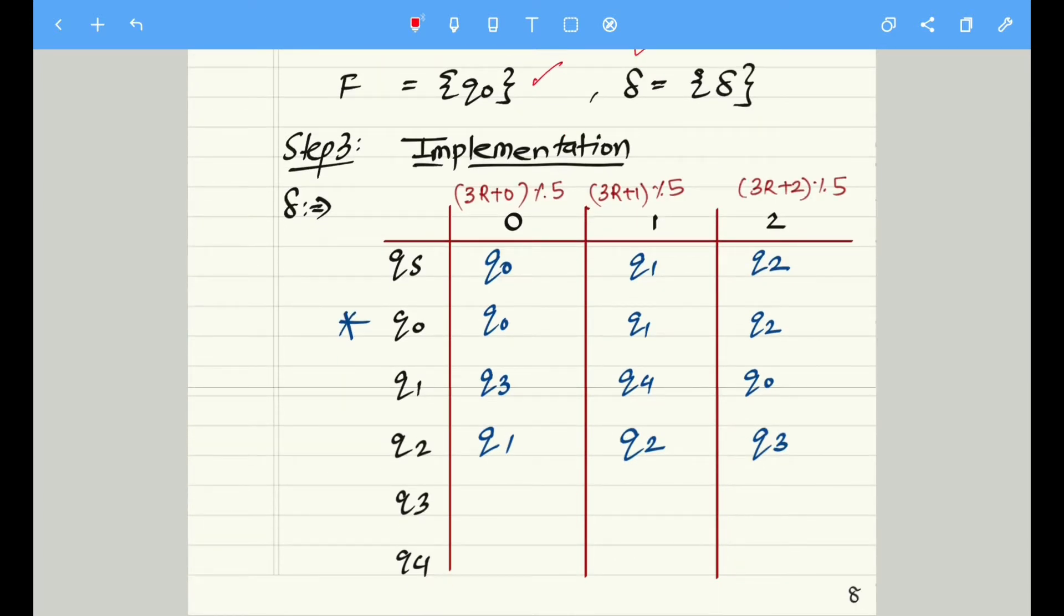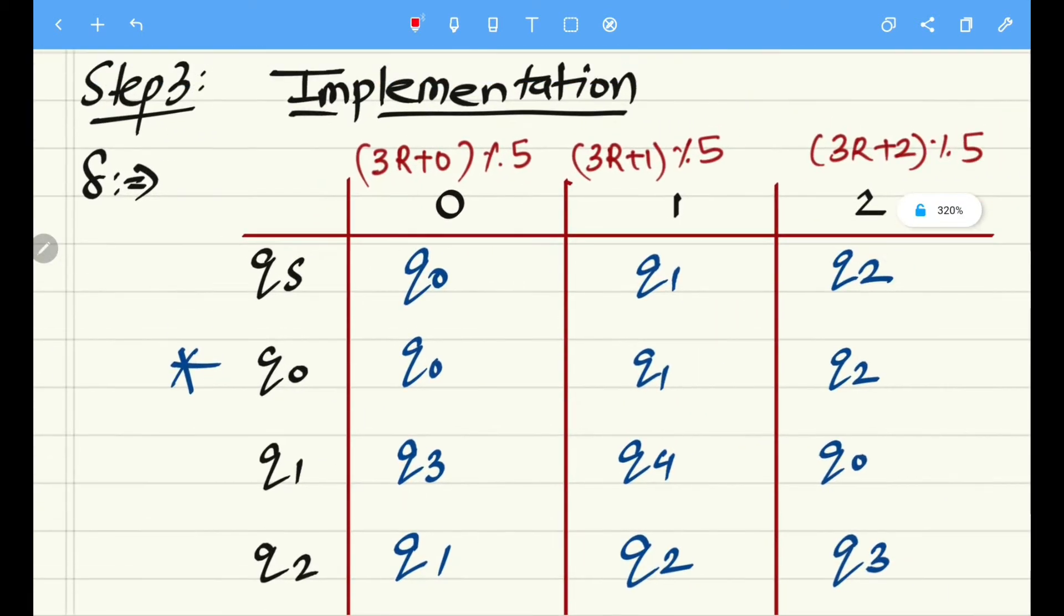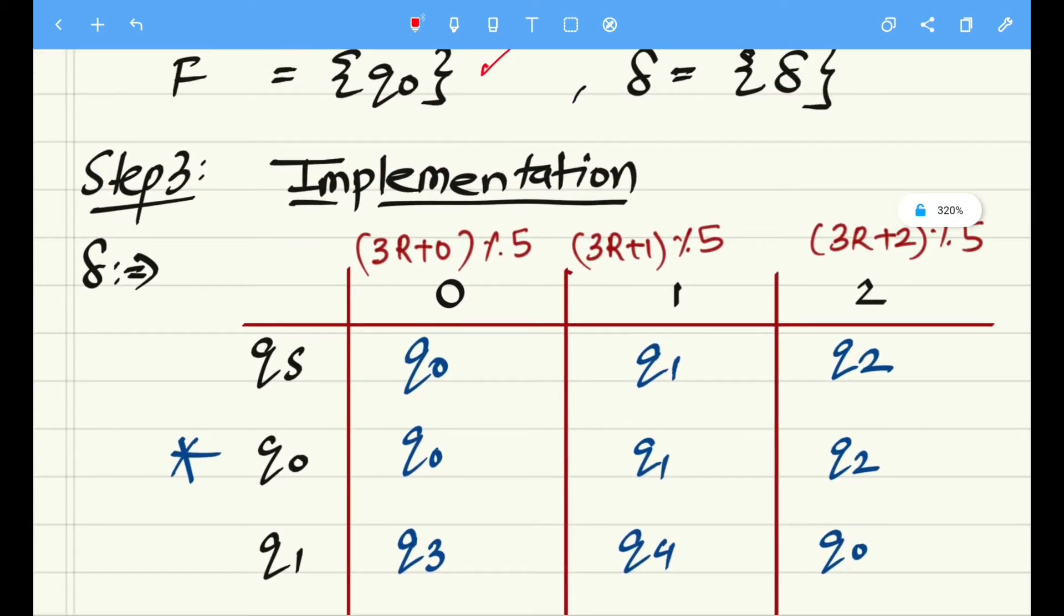Let's move on towards step number three. Step number three is exactly similar to the previous question, instead we are having three columns here for three inputs. We were having two in the previous case, that is 0 and 1. You can see the formula has changed a little bit.